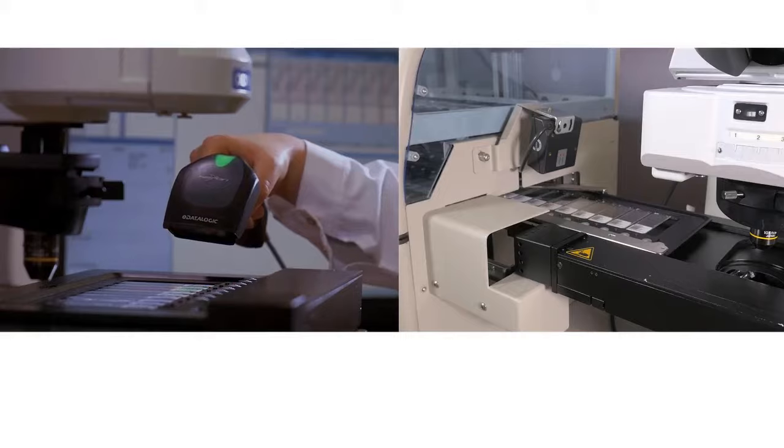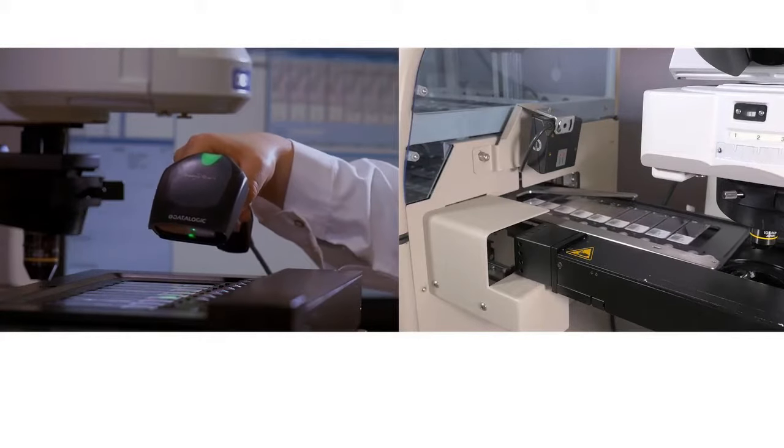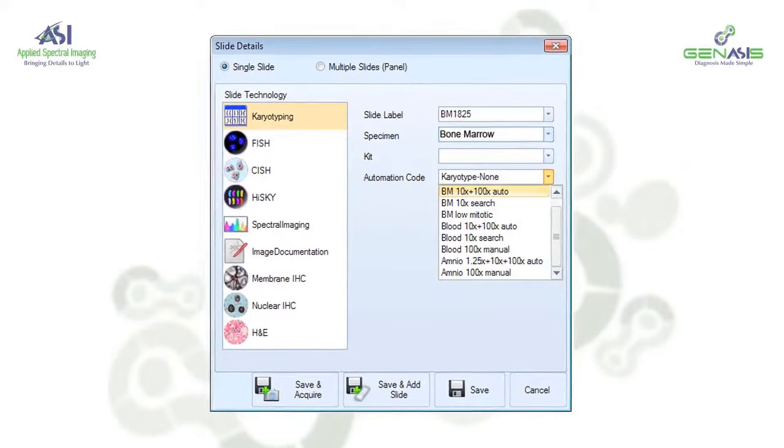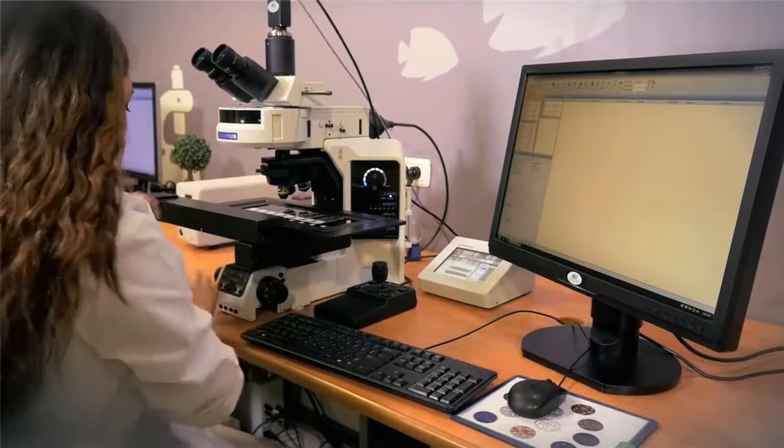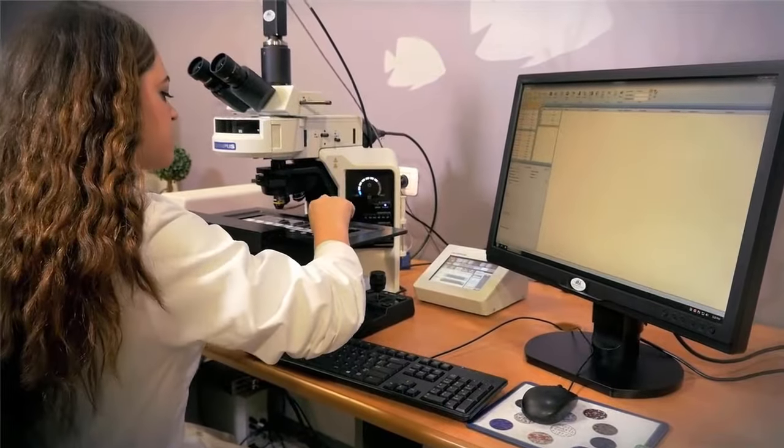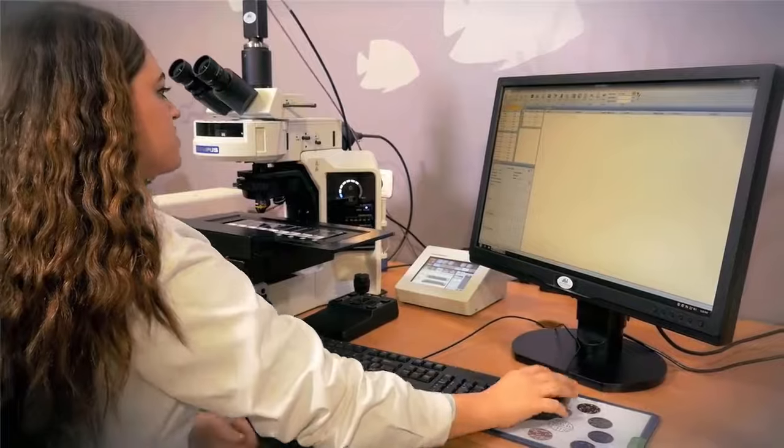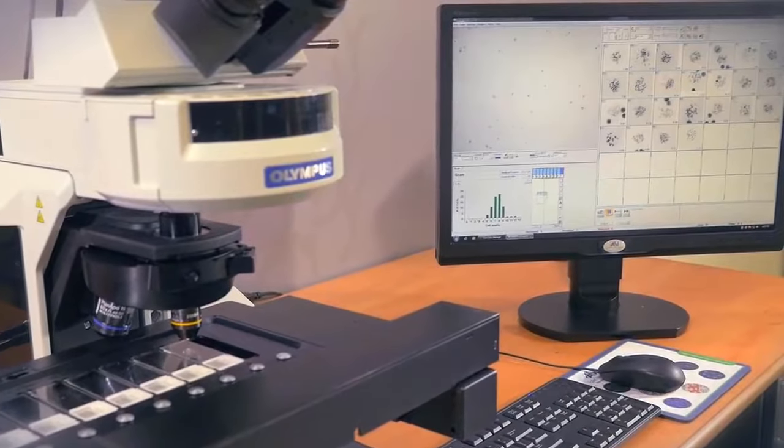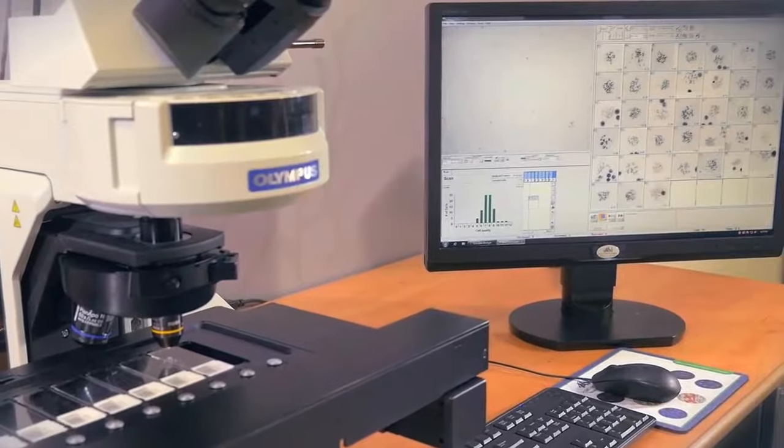Slides are identified manually or automatically using a barcode reader. A customized scanning template based on the sample type is implemented for optimal workflow. The Genesis MedScan can perform a fast, low-magnification pre-scan to identify cover slip and cell colonies. 10x scanning is then performed to identify the best metaphases in